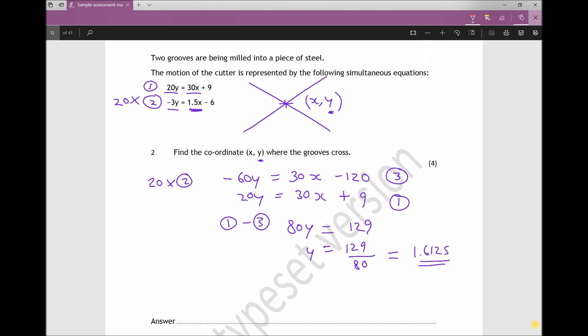So let's switch colors, and I think we'll go for equation 1. Equation 1 stated that 20y - well, I know what y is now, y is 1.6125 - equals 30x plus 9. So let's simplify the left-hand side, because 20 times 1.6125 is just 32.25.